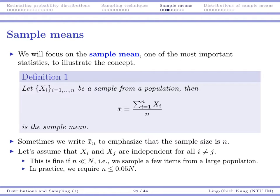We always assume that all values in a sample are independent of each other. That means drawing one observation does not affect the probability of drawing another. This is a reasonable assumption if our sample size is much smaller than the population size — specifically, when sampling without replacement, in practice we need n to be less than or equal to 5% of the population, so that Xi and Xj can be considered independent.